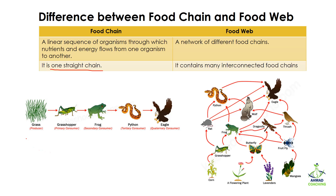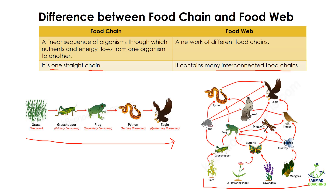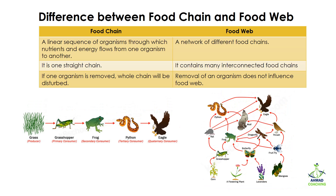The food chain is one straight chain moving from grass and ending at the eagle, while in the case of a food web it contains many interconnected food chains. We can see different food chains at the base and different endings, so they are all interconnected.